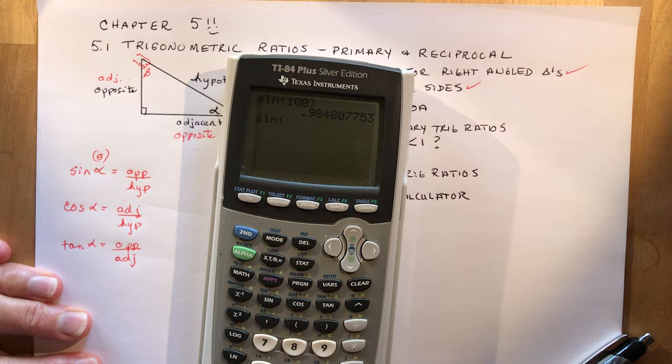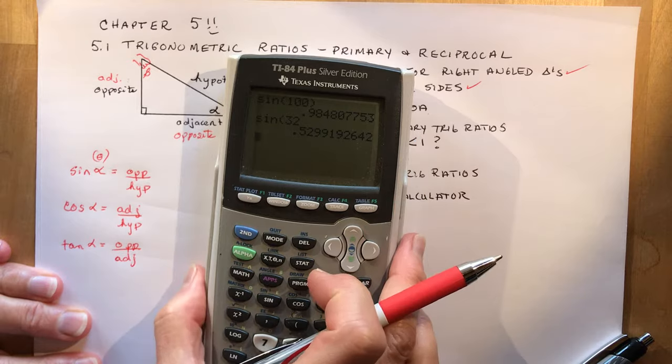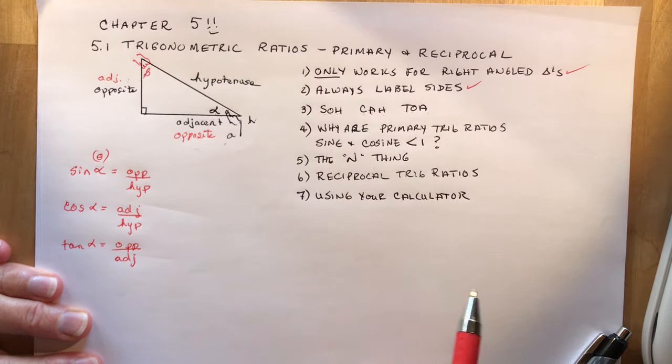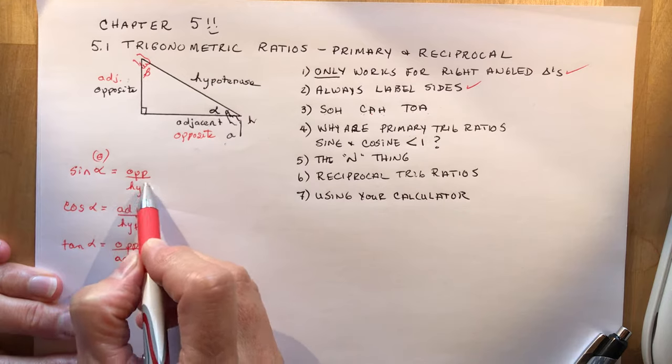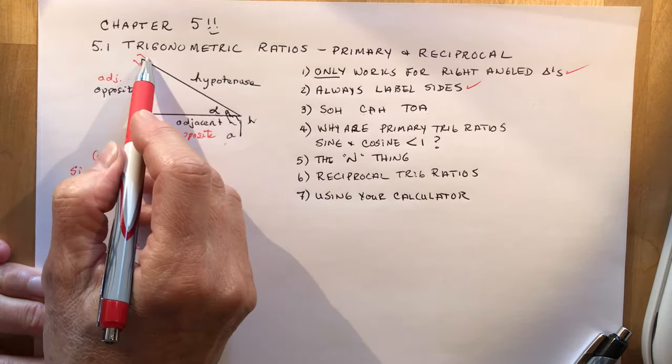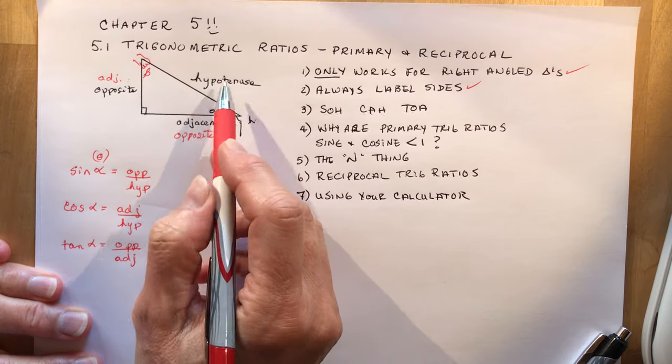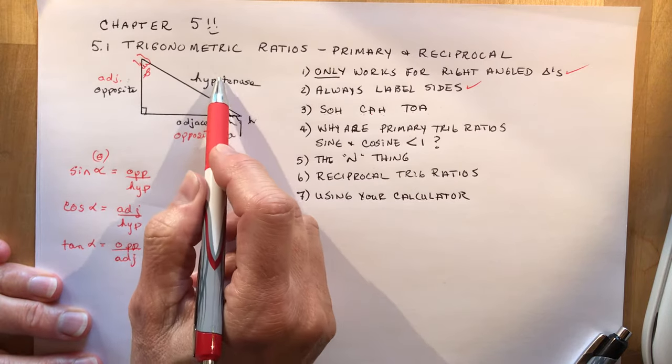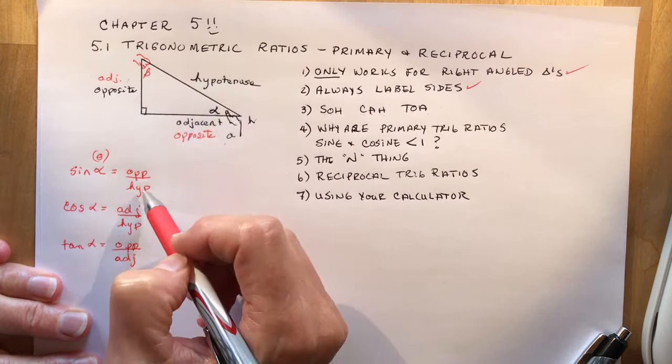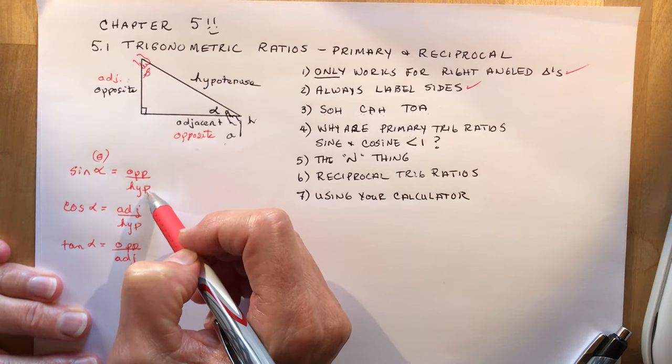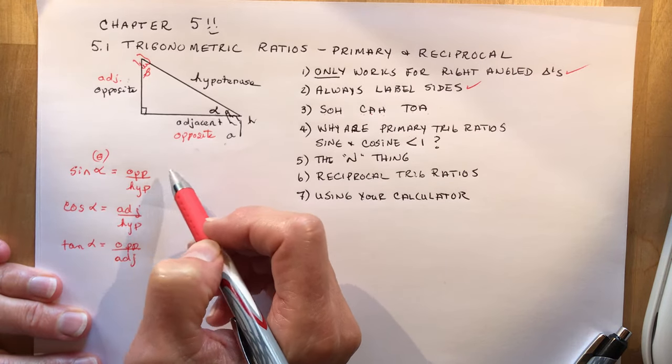The sine of thirty-two degrees, point five two nine nine. It's never bigger than, it's always less than one. And the reason is that if you think about this, your hypotenuse is the largest side. So anytime you make a ratio of this to this or this to this, with this being the largest, once you're dividing by the largest number, it's going to give you an answer less than one.